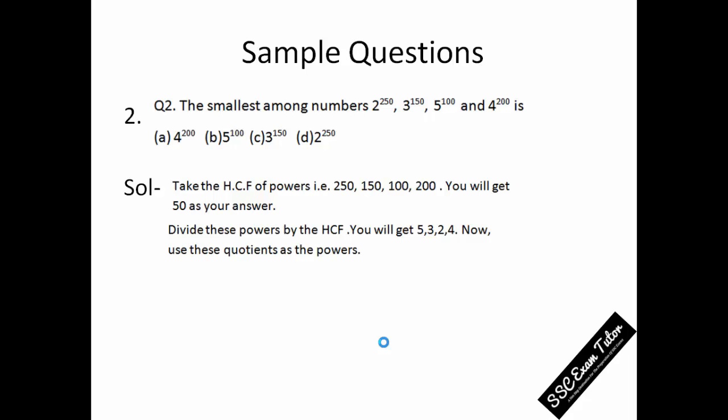Once you get the HCF, you need to divide the powers by the HCF. Dividing 250 by 50, you will get 5; 150 by 50, you will get 3; 100 by 50 is equal to 2; and 200 upon 50 is equal to 4. Now use these quotients as the powers. We have 2 to the power 250, and when we divided 250 by the HCF, that is 50, we got 5, so put it as the power of 2 and you will get 32.